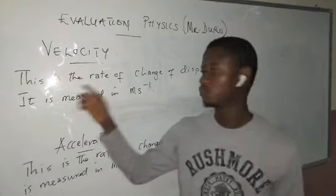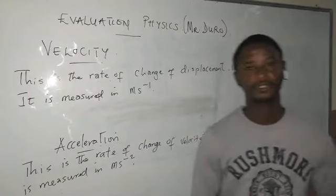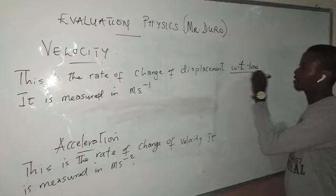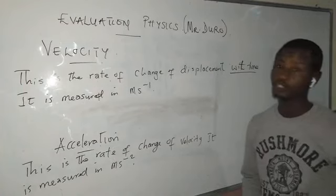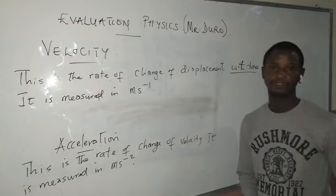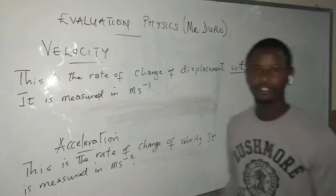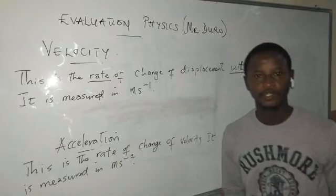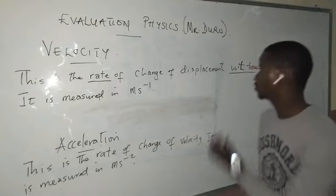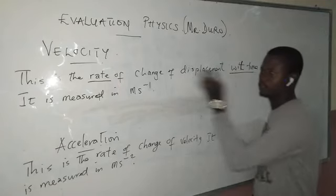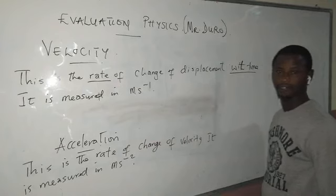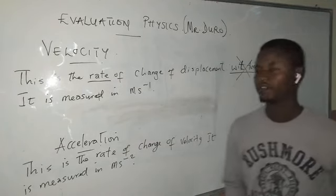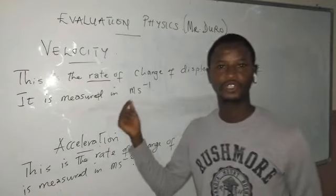Simply put, velocity is the rate of change of displacement. Most students make the mistake of including 'time' at the end of their definition, which is totally wrong in physics. The reason is that it is tautology — the moment you mention 'rate' in physics, it already makes reference to time. So putting time at the end of the definition is repeating the same thing. Simply put, velocity is the rate of change of displacement.